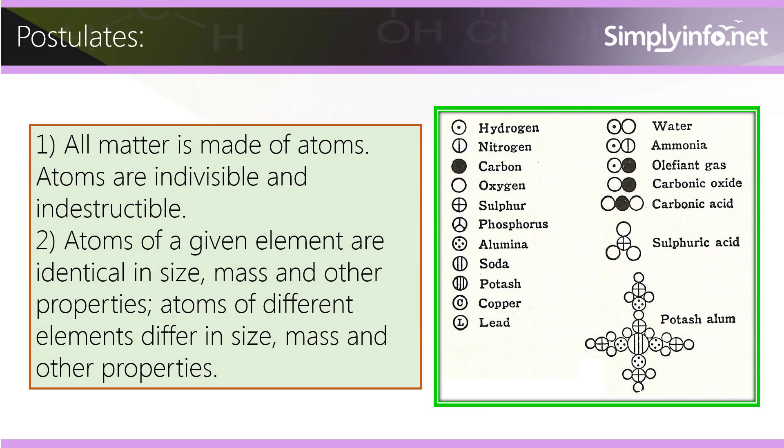Postulates: Number one — all matter is made of atoms; atoms are indivisible and indestructible. Number two — atoms of a given element are identical in size, mass, and other properties; atoms of different elements differ in size, mass, and other properties.